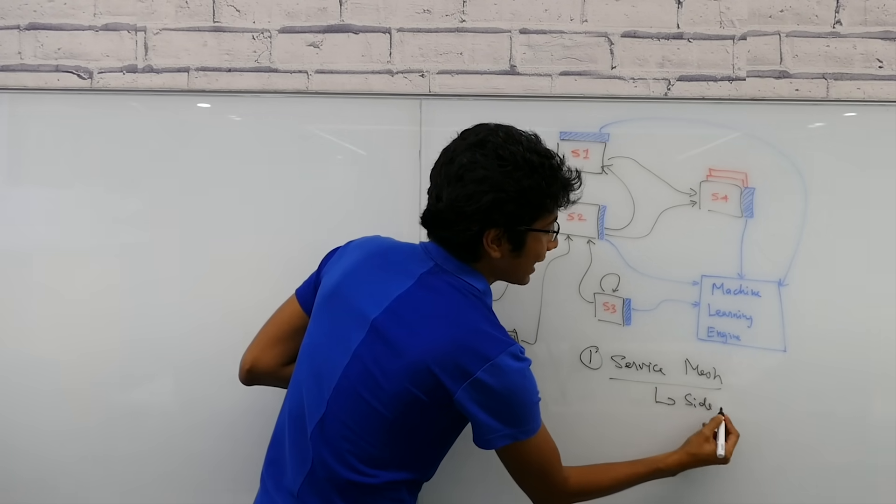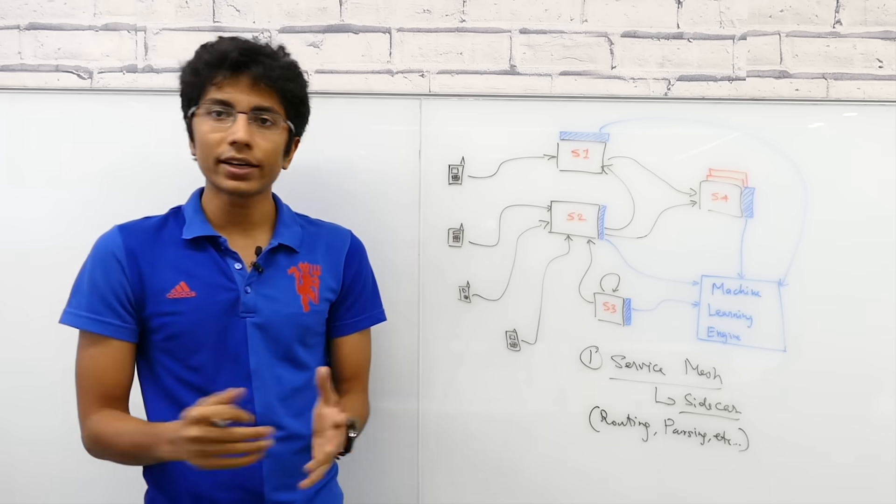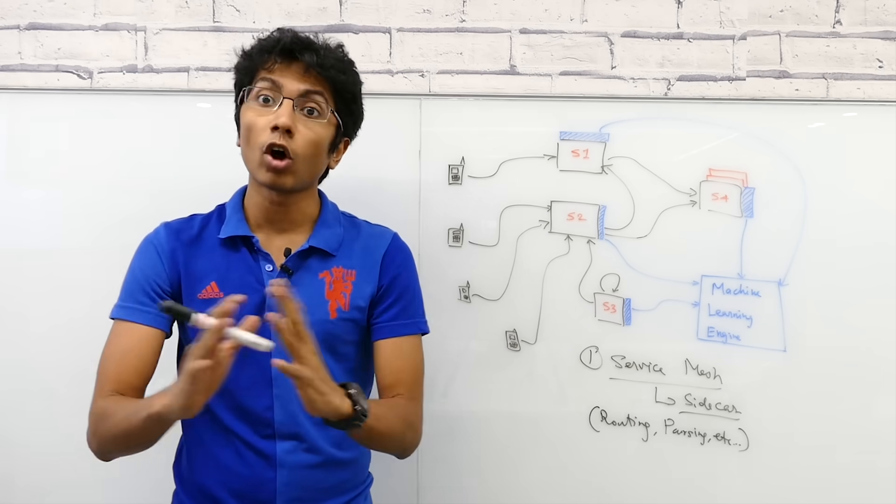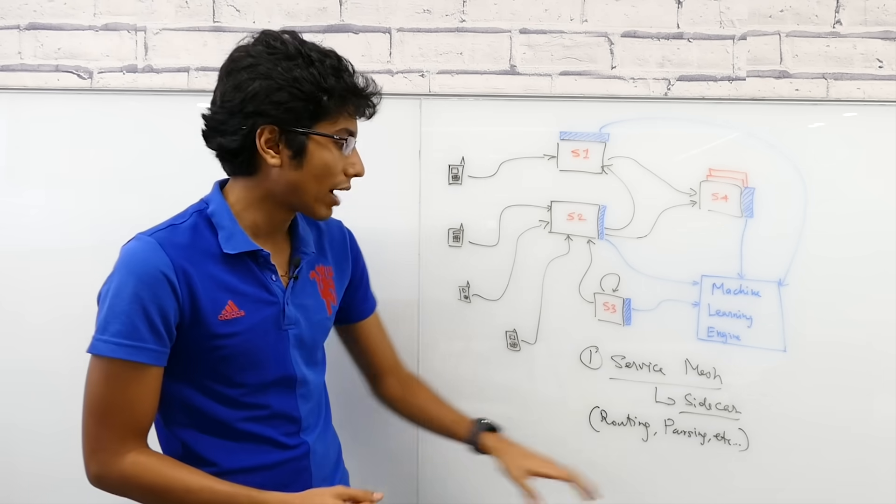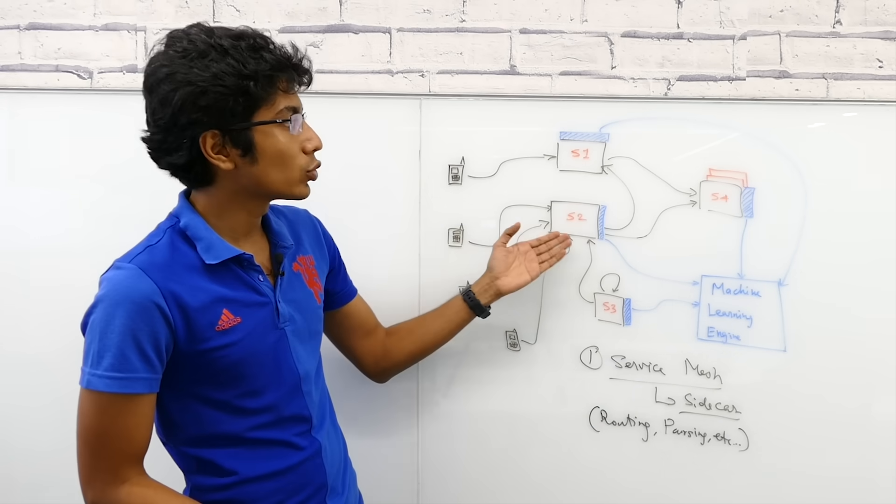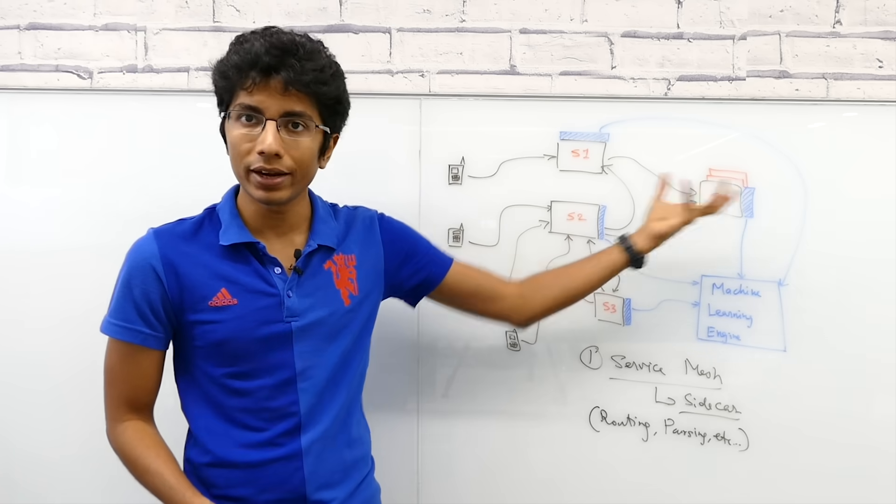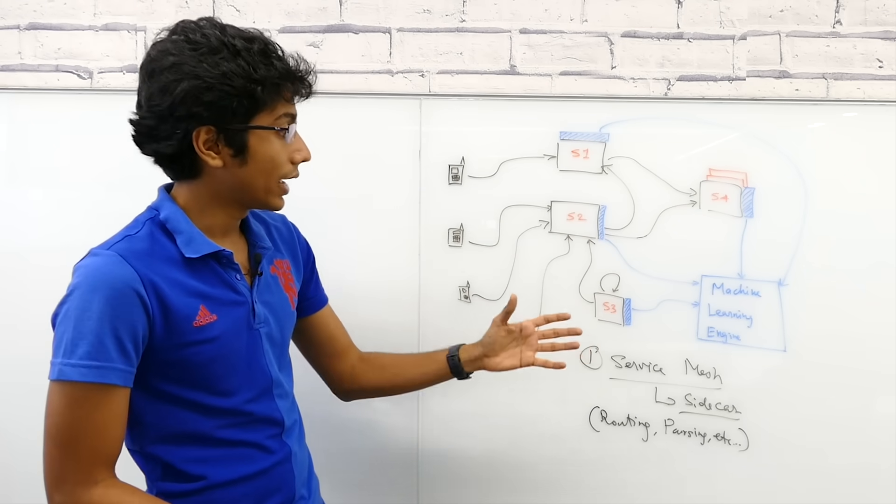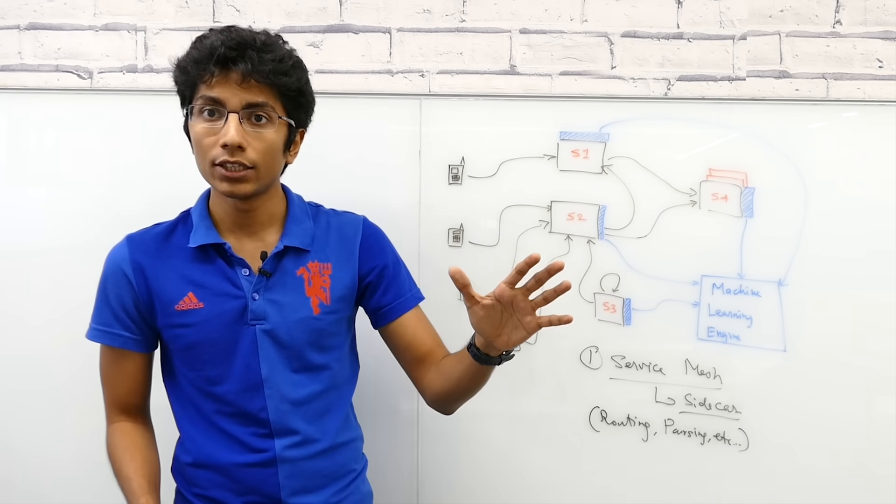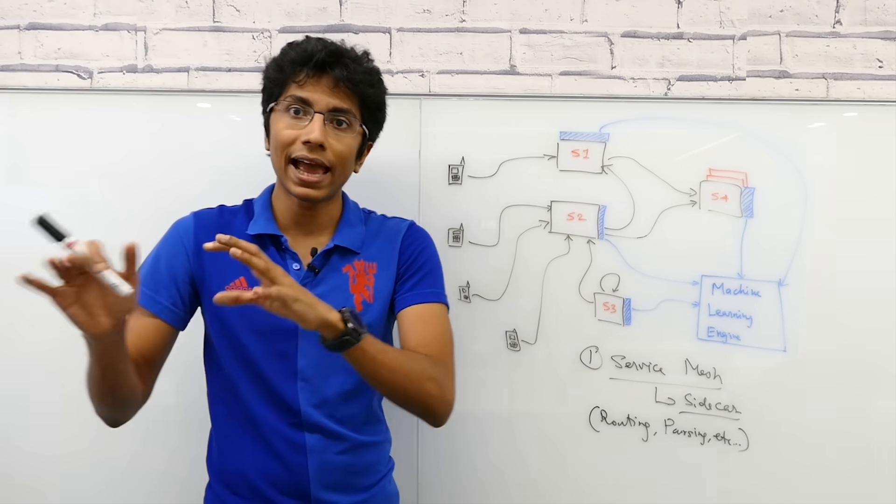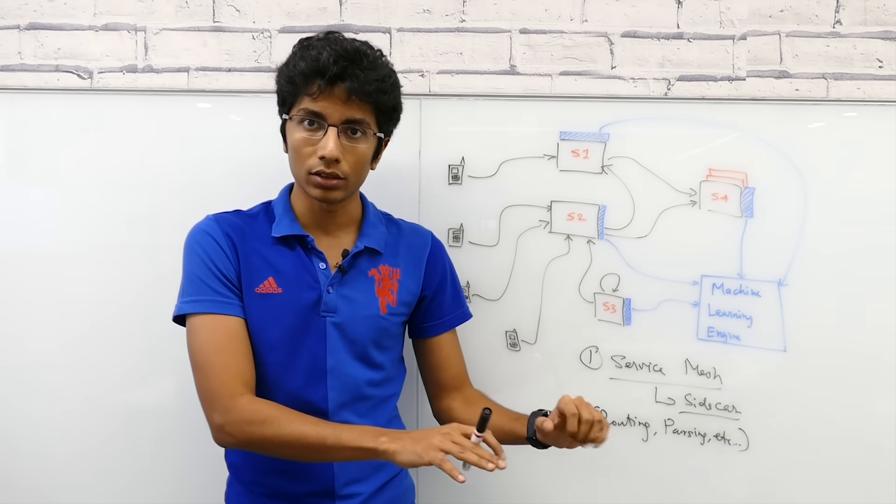A service mesh involves a sidecar. A sidecar in the microservice architecture is something that handles a lot of common functionalities. For example, you have routing. If S2 is sending a message to S4, it figures out the IP address of the box on S4 where it needs to send the message in a particular way. S3 to S1 is the same way, so that logic is the same. You can actually code that logic into a sidecar.